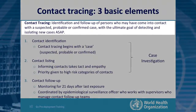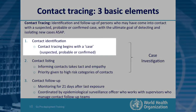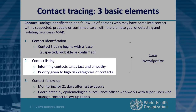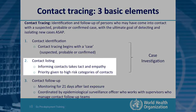There are three basic elements of contact tracing: the identification and follow-up of persons who may have come into contact with a suspected, probable, or confirmed case, with the ultimate goal of detecting and isolating new cases as soon as possible. Step one is contact identification — tracing begins with a case suspected, probable, or confirmed to have Ebola. Step two is contact listing — informing contacts requires tact and empathy, and priority must be given to high-risk categories of contact.